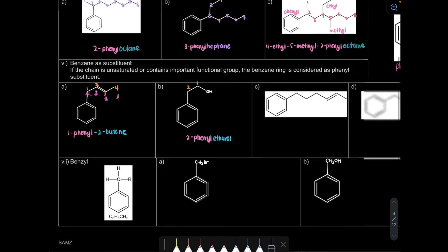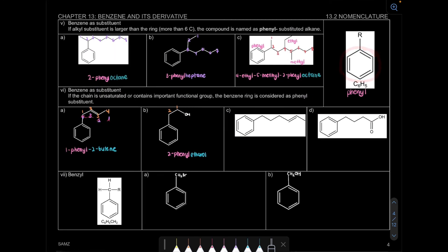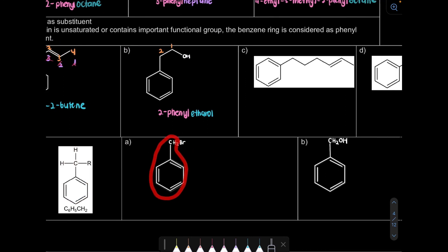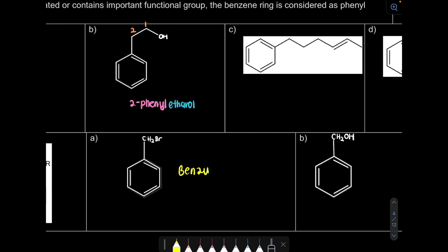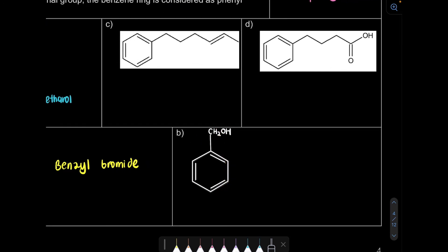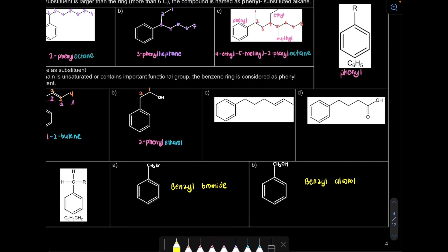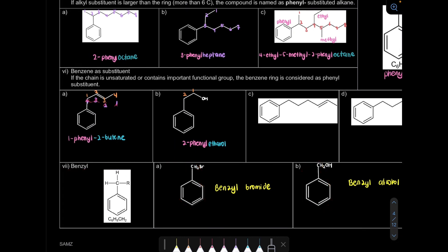Last but not least, we look at benzyl. Whereas phenyl is C6H5, benzyl has an extra CH2 — it is C6H5CH2. So this is phenyl, and this is benzyl. The first example is benzyl bromide. For question B, it also has a benzyl group, but with OH the name becomes benzyl alcohol. So whenever you see the CH2 group attached to benzene, the name is benzyl.